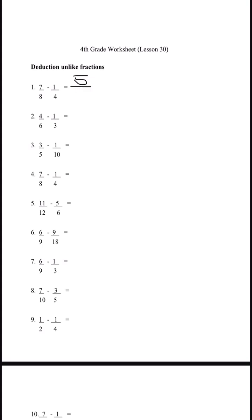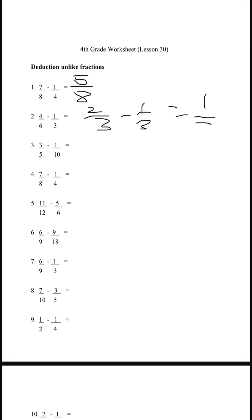Number two: we don't have to make the denominator 6, we can make it 3. We divide top and bottom by 2 and get 2 over 3 minus 1 over 3. 2 minus 1 is 1, so 1 over 3 is the answer for number two.